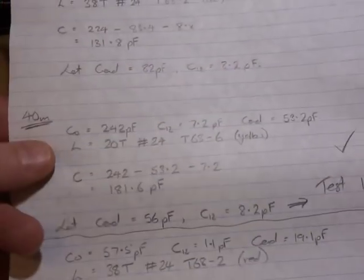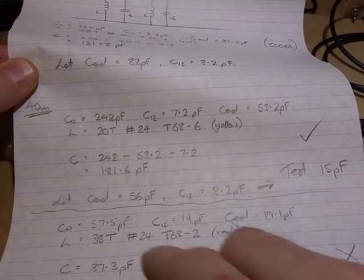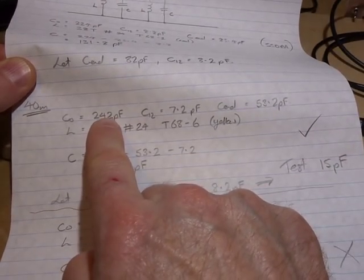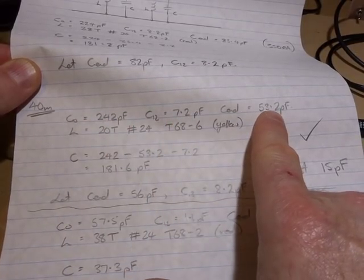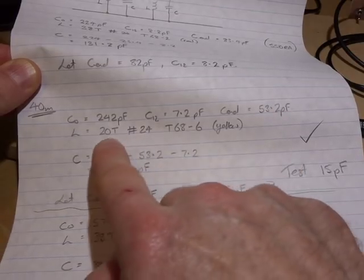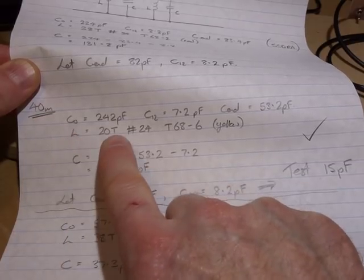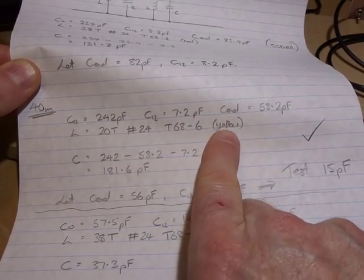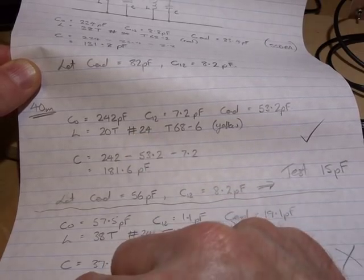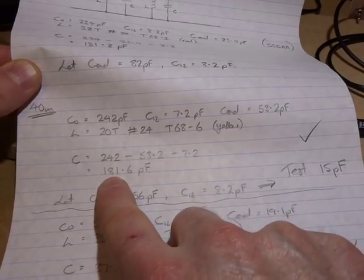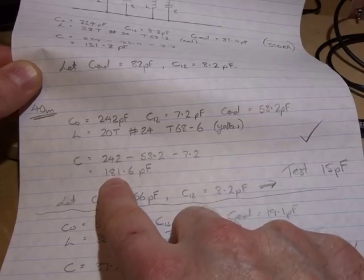So again, exactly the same appendix there - C0 was 242, C12 7.2, and C-end 53. In this particular case, for the 40 meter bandpass filter, the inductor is 20 turns on a T68-6, that's the large yellow core, again with 24 gauge wire. Same calculations to come up with the value of the capacitors across those inductors - in this particular case, 181 picofarads.